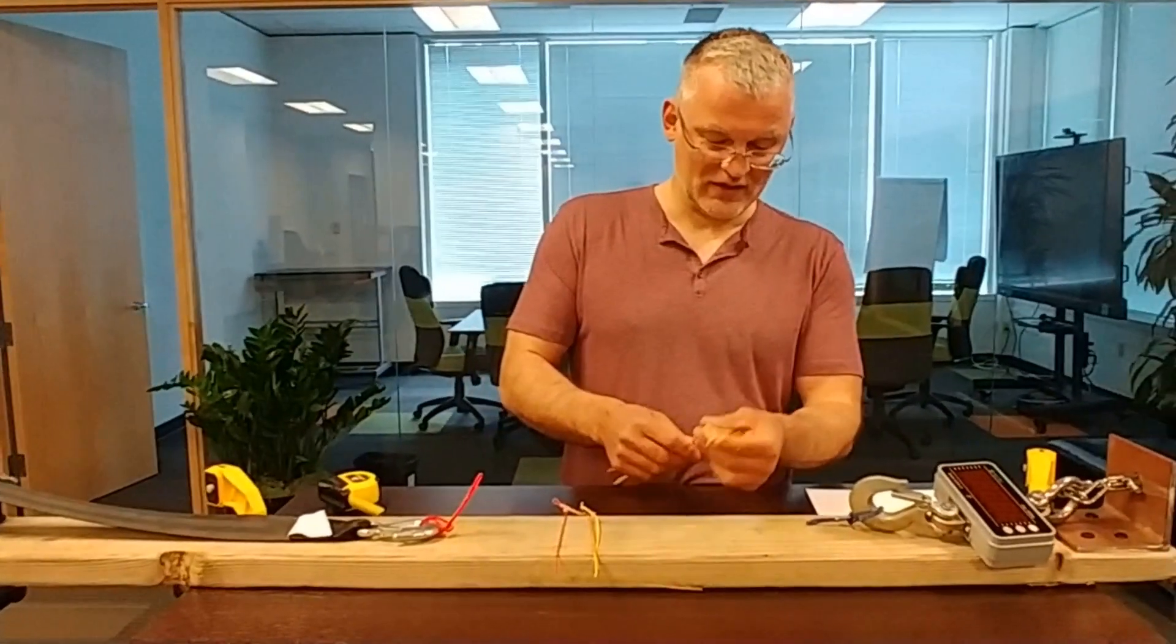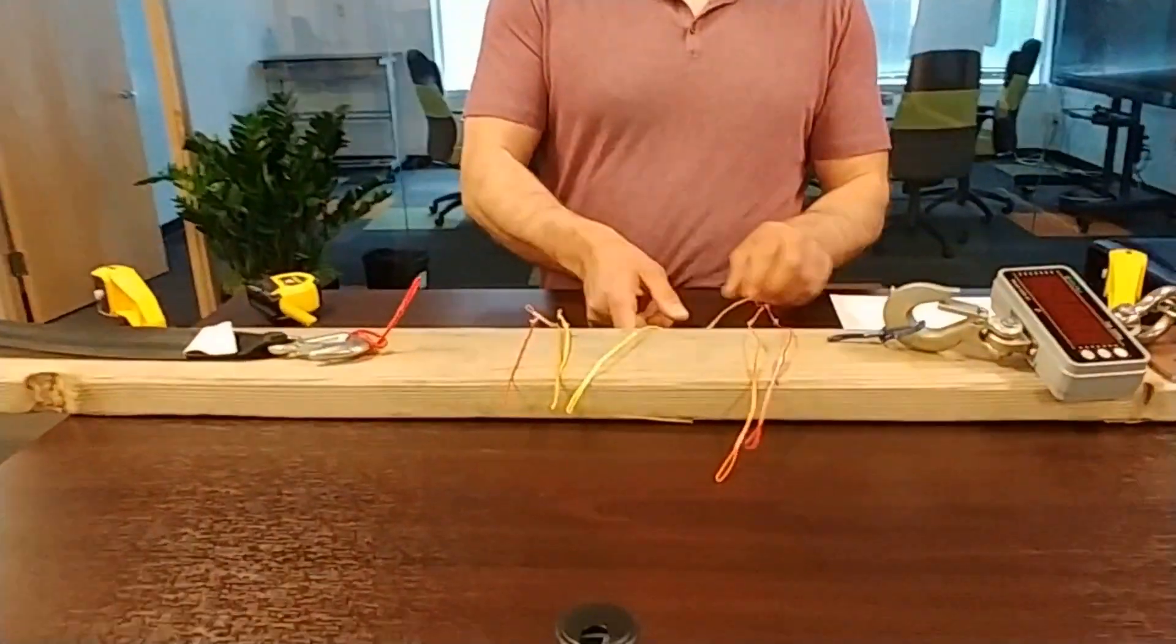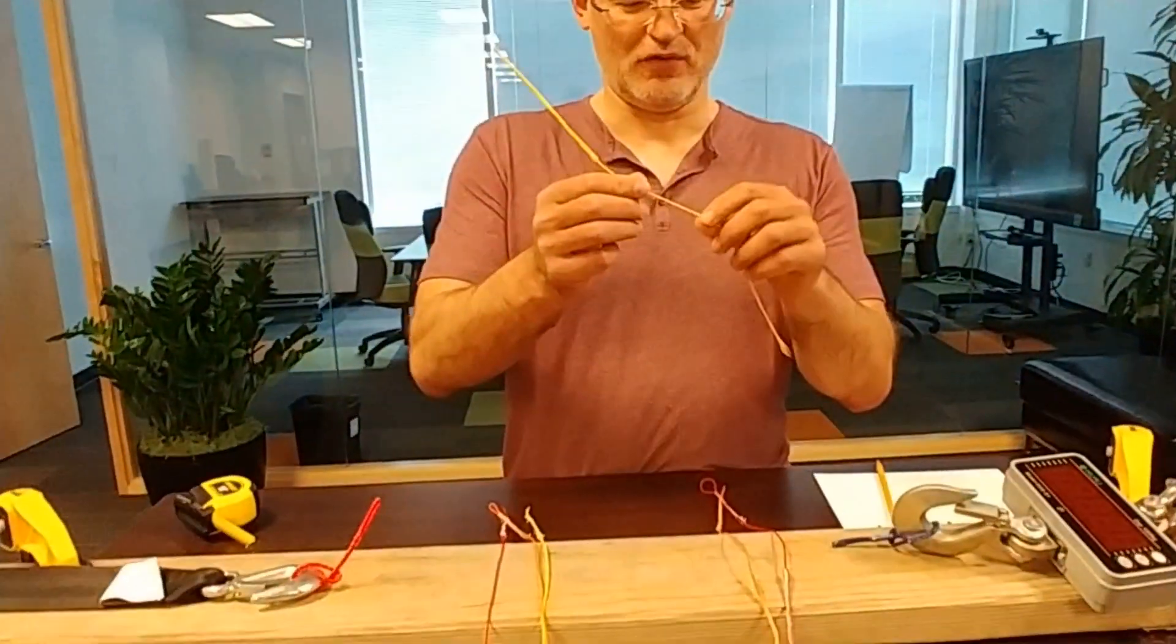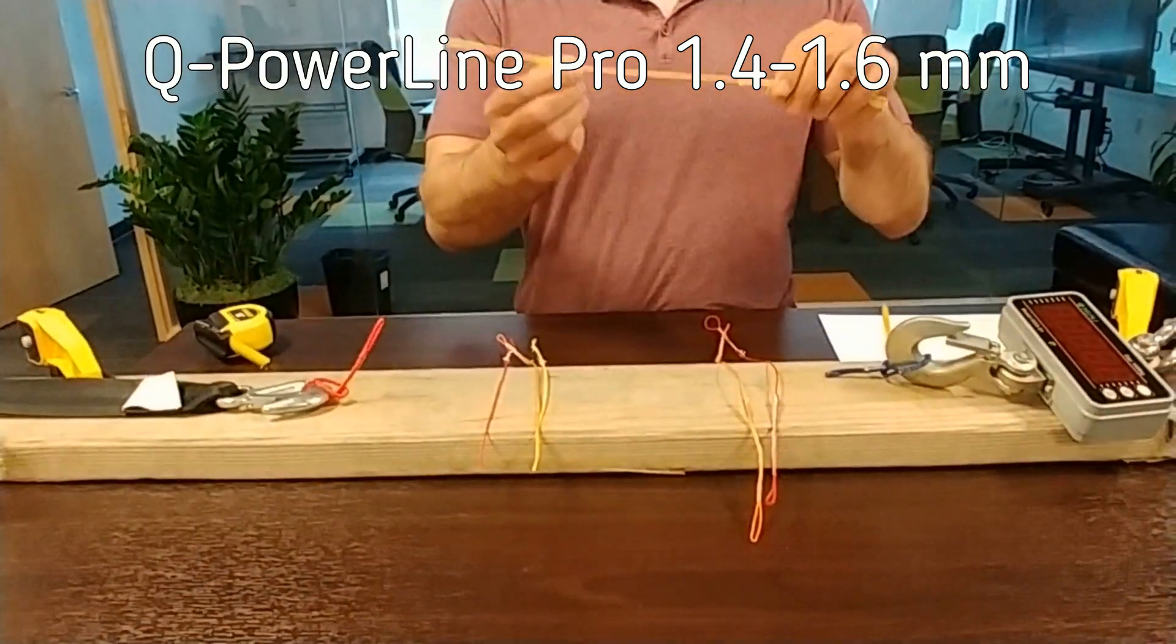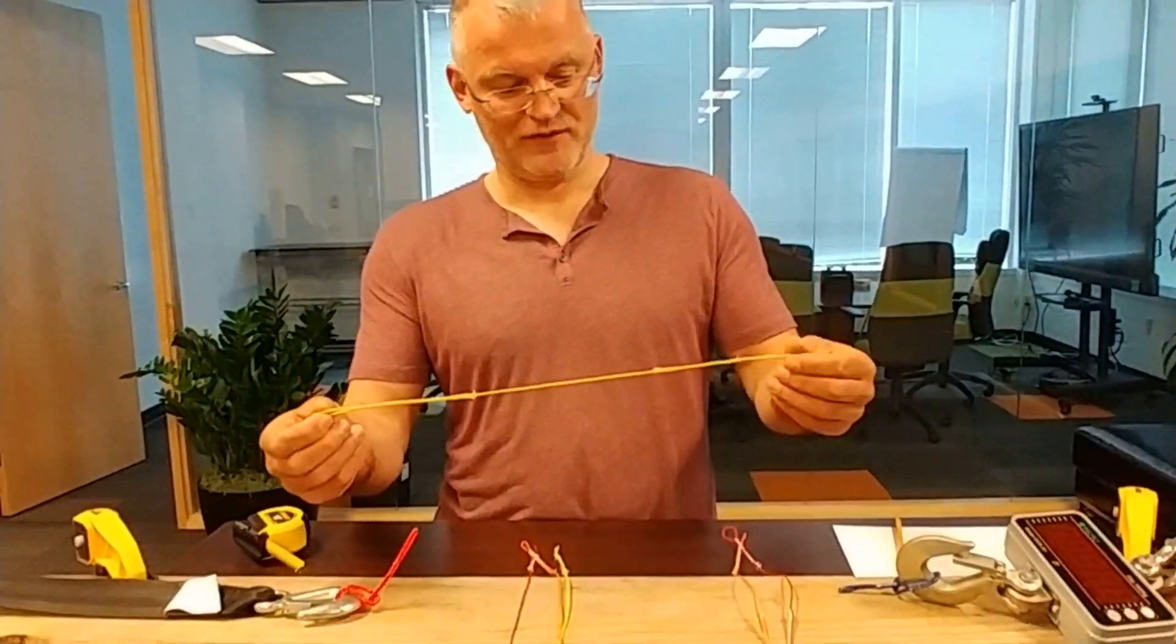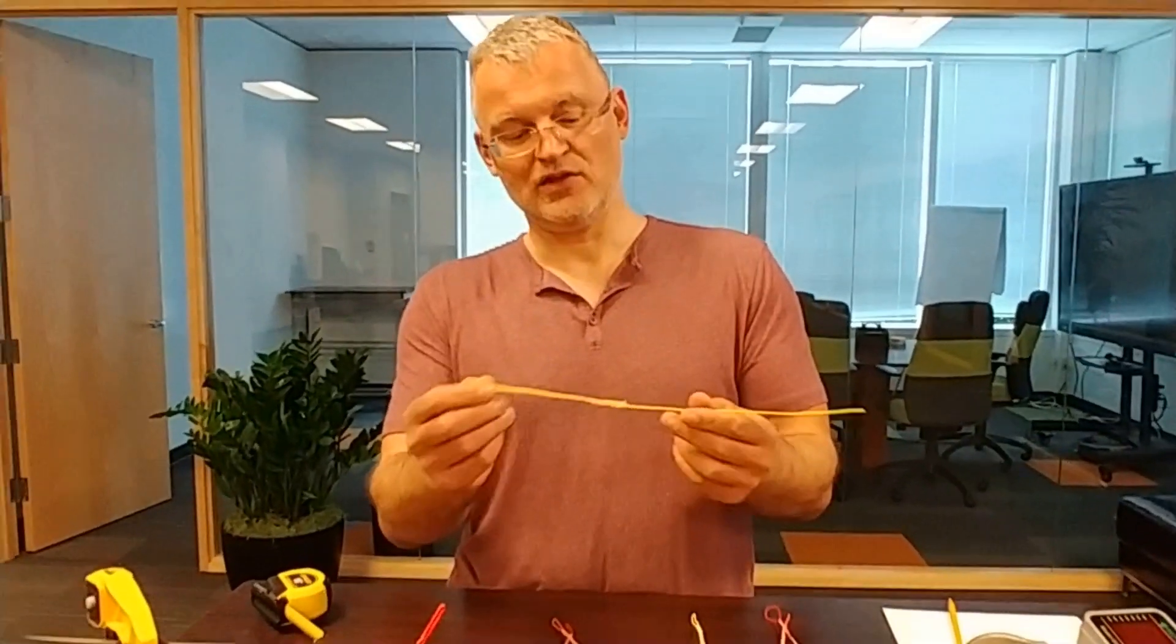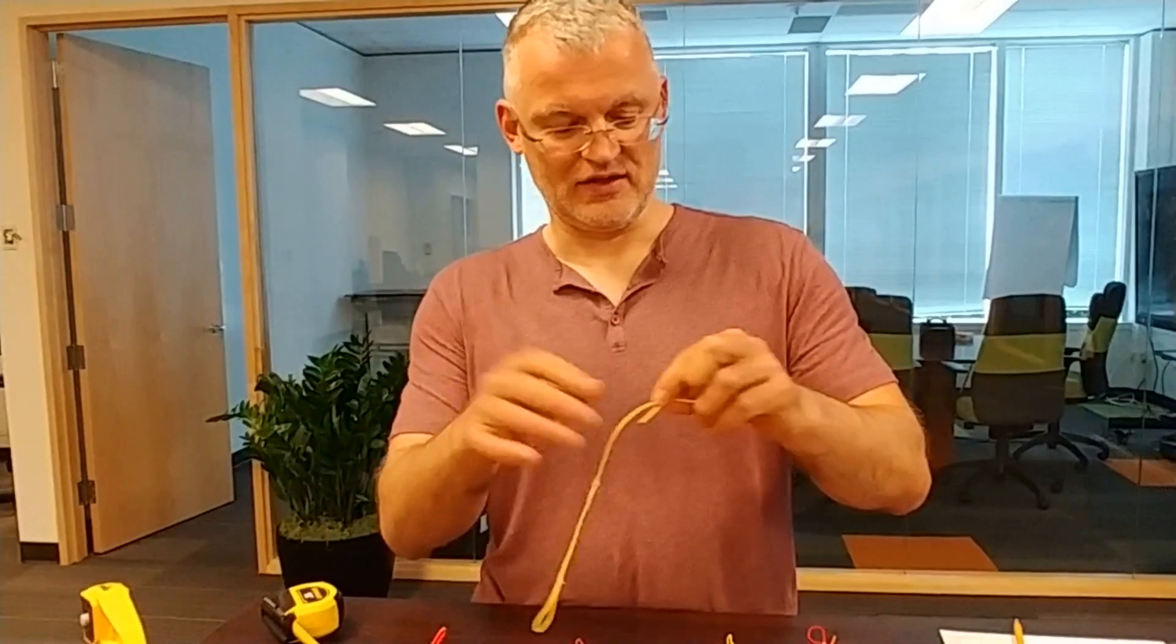I have three different colors of lines. They're all the same, but they measure between about 1.4 and 1.6 millimeters in diameter. But I have lines that are finished professionally with loops, and I have lines that have one loop, and another one is going to be a hand-tie knot.